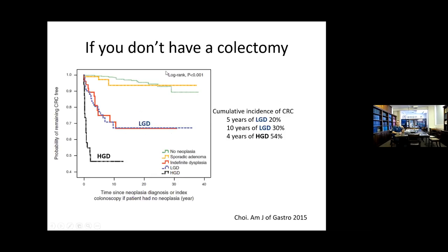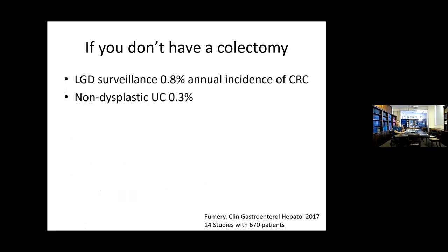This is quite interesting: looking at patients who didn't have a colectomy, the cumulative incidence of colorectal cancer in the St. Mark's study over time for low-grade dysplasia was 20-30%, and for high-grade dysplasia was 54%. But in another study of 14 studies with 670 patients, they found that low-grade dysplasia had a 0.8% annual incidence of colorectal cancer versus 0.3% for non-dysplastic UC — just an interesting take on whether not having a colectomy would make any difference.